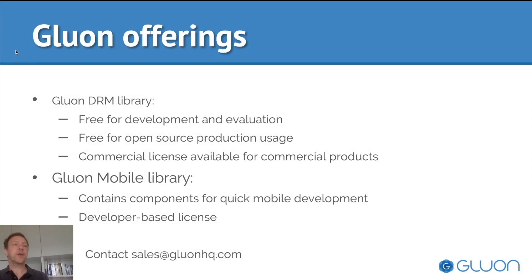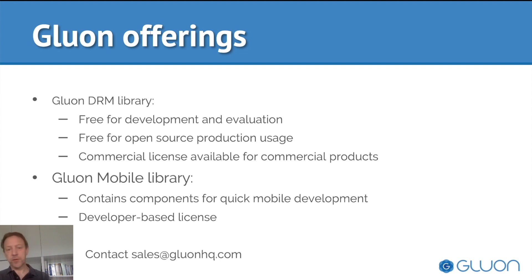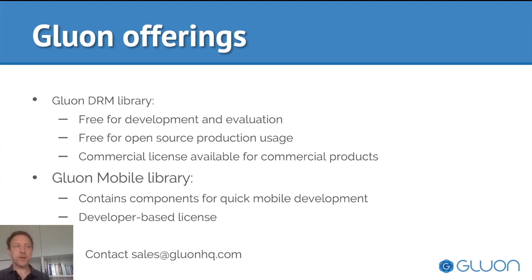So what do we offer here at Gluon? The DRM library that we demonstrated is free for development and evaluation. If you're evaluating it or want to create some cool concepts, you can use it for free. It's very useful if you're not sure yet whether you want to use it in production. If you want to use it for an open source production project, you can keep using it for free. If you want to use it in a commercial product that you are shipping and distributing to customers, we can give you a commercial license. We are also using Gluon Mobile, which contains components that allow you to quickly develop a mobile application without spending much time creating mobile-specific controls. That is a developer-based license. If you're interested, contact sales at gluonhq.com.